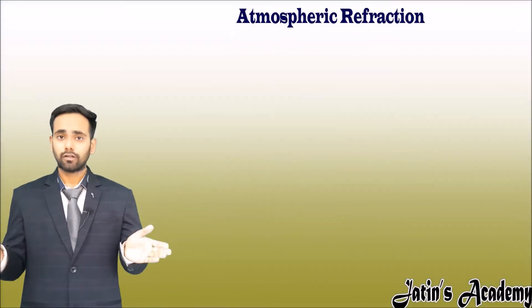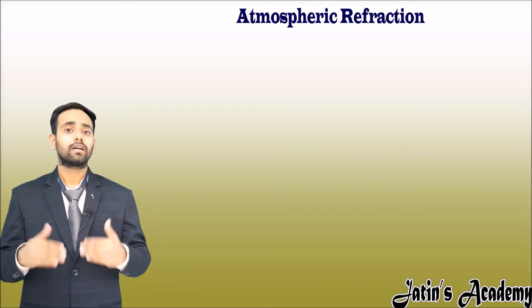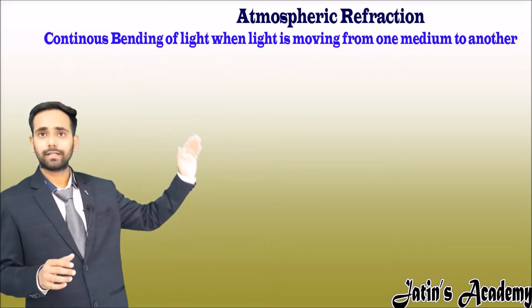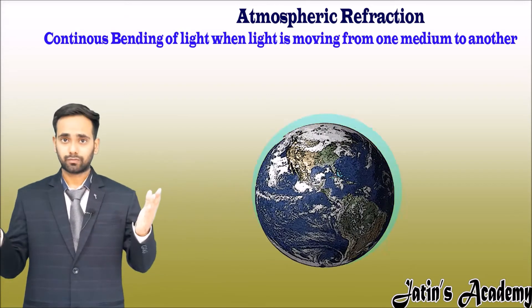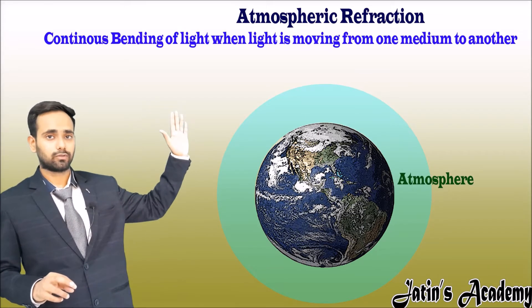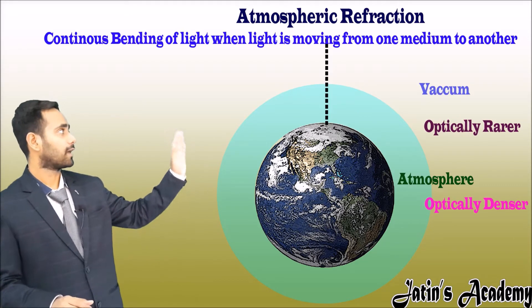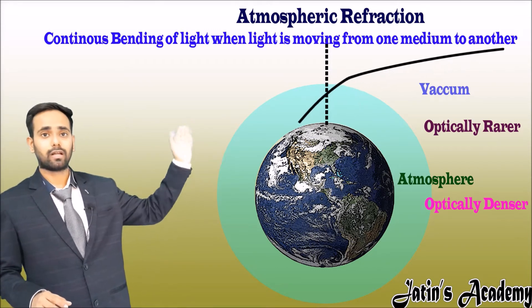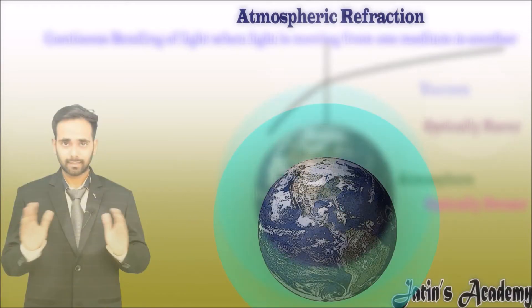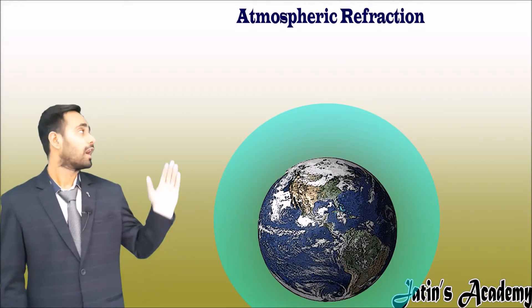In order to understand atmospheric refraction, first understand the term refraction. Refraction is the bending of light when it moves from one medium to another. In the atmosphere, we have two mediums: the atmosphere itself and the vacuum outside it. The atmosphere is optically denser than vacuum, so when light travels from vacuum to atmosphere it bends towards the normal.